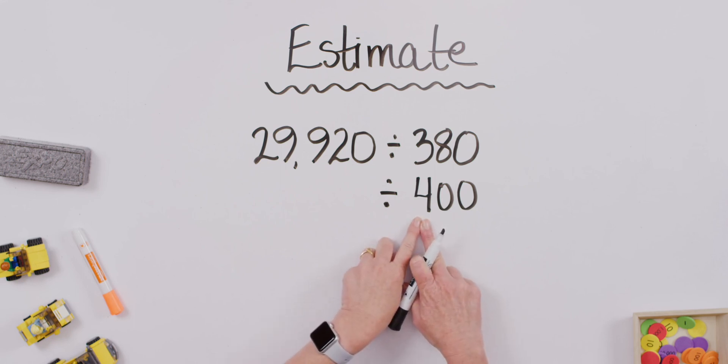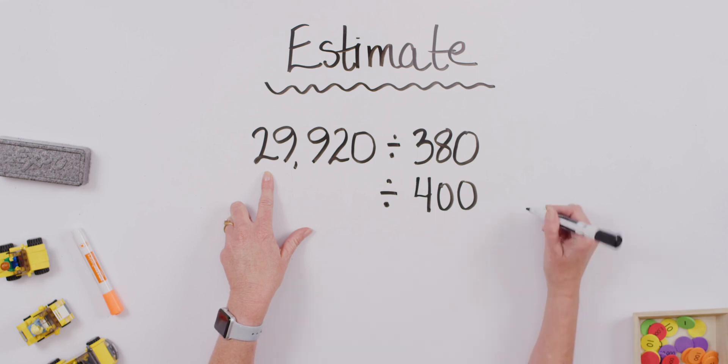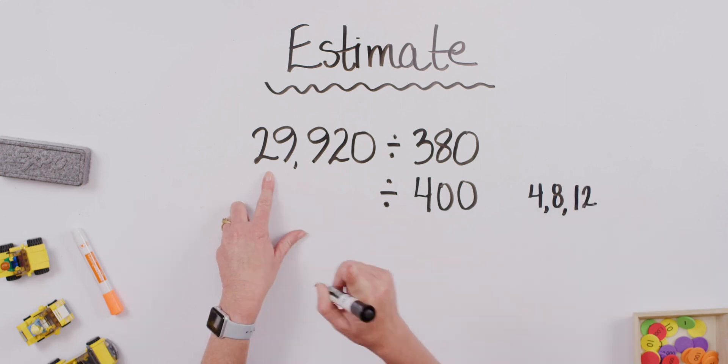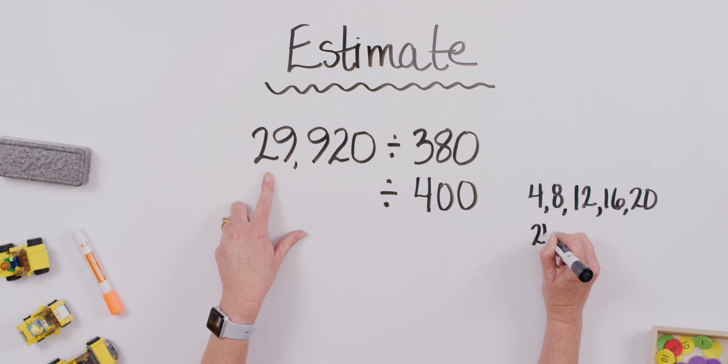Our goal is to think of some multiples of 4. If we start with 4, then we have 8, 12, are we doing 29 yet? No. So, let's keep going. 16, 20, 24, should we keep going? 28, should we keep going? Some of you said yes and some of you said no. Let's do one more. 32.